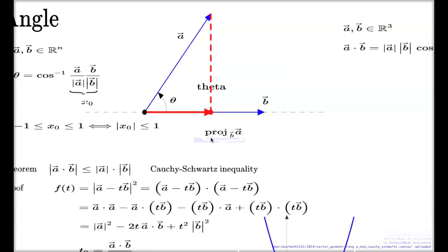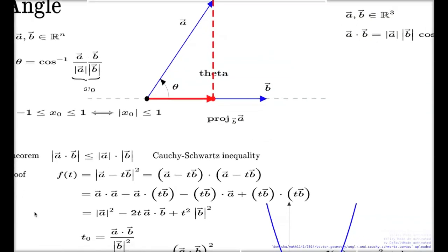And my proof, this beautiful proof of the Cauchy-Schwartz inequality, as a byproduct, free of charge, it gives us the way to find this projection. All we have to do, we have to take the vector B and scale it by this fantastic value T0. Down here.